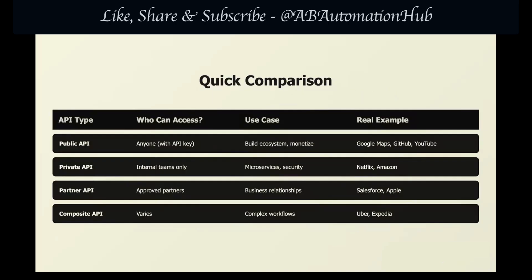Here's a quick comparison: public APIs are accessed by anyone but have API keys and some limitations; private APIs are only used by internal teams; partner APIs are used by approved partners only; and composite APIs vary. Real-world examples: public APIs include Google Maps, GitHub, and YouTube; private APIs include Netflix and Amazon; partner APIs include Apple and Salesforce; and composite APIs include Uber and Expedia.